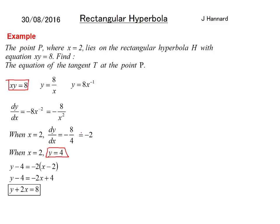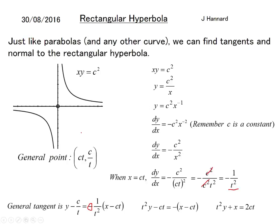Probably a bit of an easier example. You would generally get generic ones. But just remember the generic equation to the tangent which is t squared y plus x equals 2ct. And that is pretty much that with rectangular hyperbola. It is probably one of the harder topics on FP1. You can get some pretty nasty questions on them. But this is the basic knowledge that you need to know.